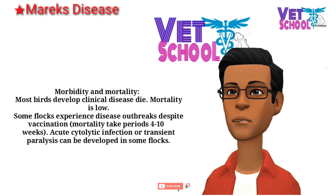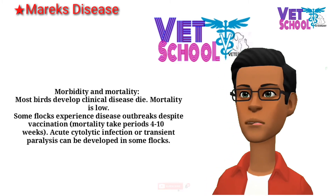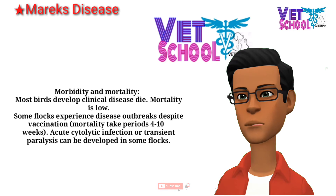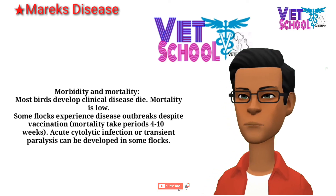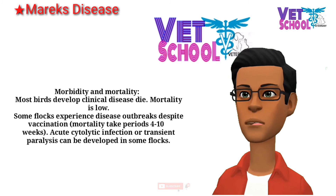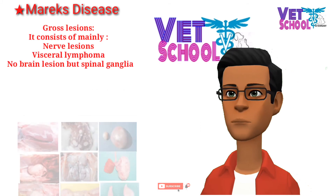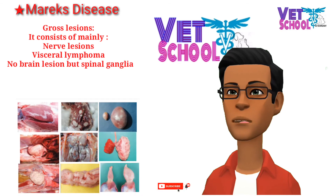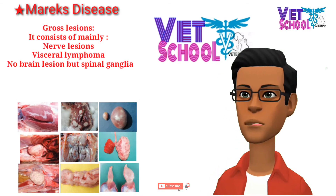Acute fatal deaths may occur followed by paralysis. The ocular syndrome is characterized by blindness, unilateral or bilateral. Morbidity and mortality: most birds that develop clinical disease die. Mortality is low in some flocks, but some flocks experience disease outbreaks despite vaccination. Mortality take periods are four to ten weeks. Acute cytolytic infection or transient paralysis can develop in some flocks.